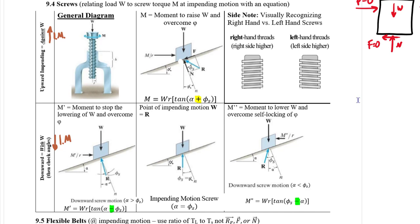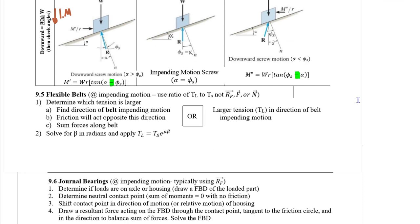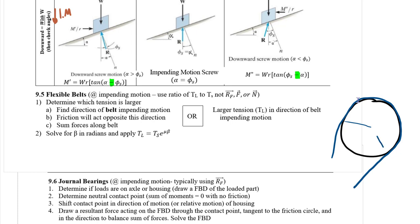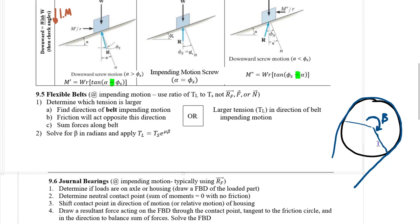Screws can be part of an overall frame and machine system, taking a load and asking for the moment needed on that screw. We then talked about flexible belts, which look at the friction between a cylinder and a flexible belt. The belt contacts the cylinder over a certain angle called beta, always measured or converted to radians. Radial lines are perpendicular to tangent lines — that helps you find beta geometrically.